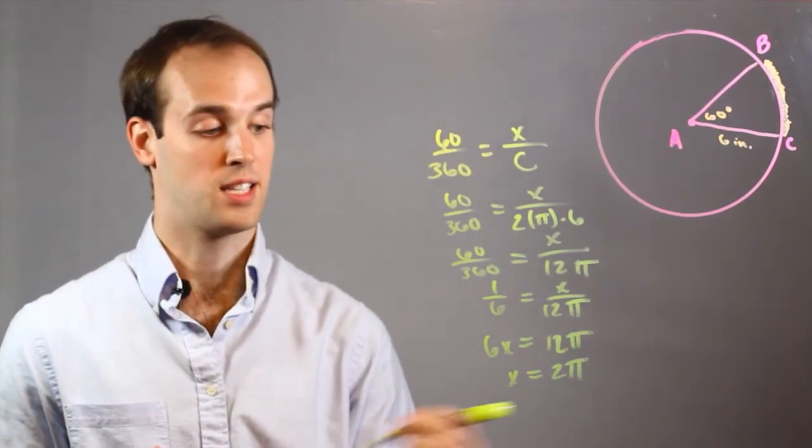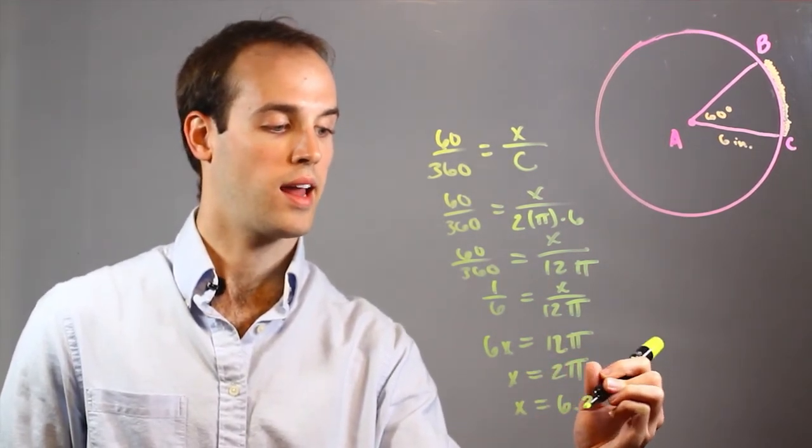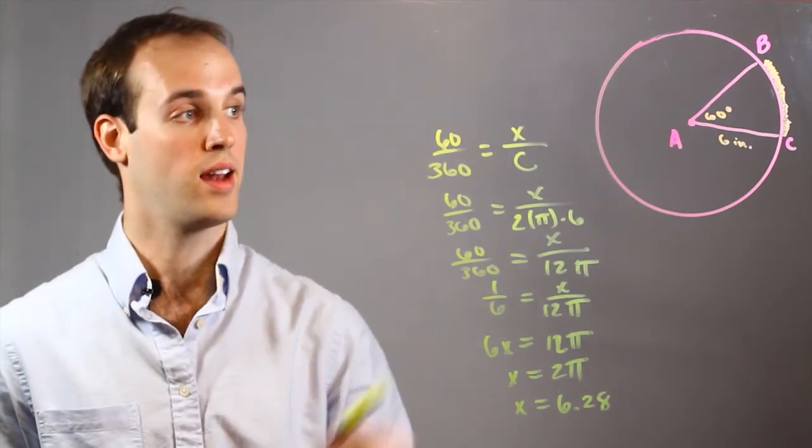And then I could simplify that by putting in 3.14 for pi, and I get that x is equal to approximately 6.28 inches.